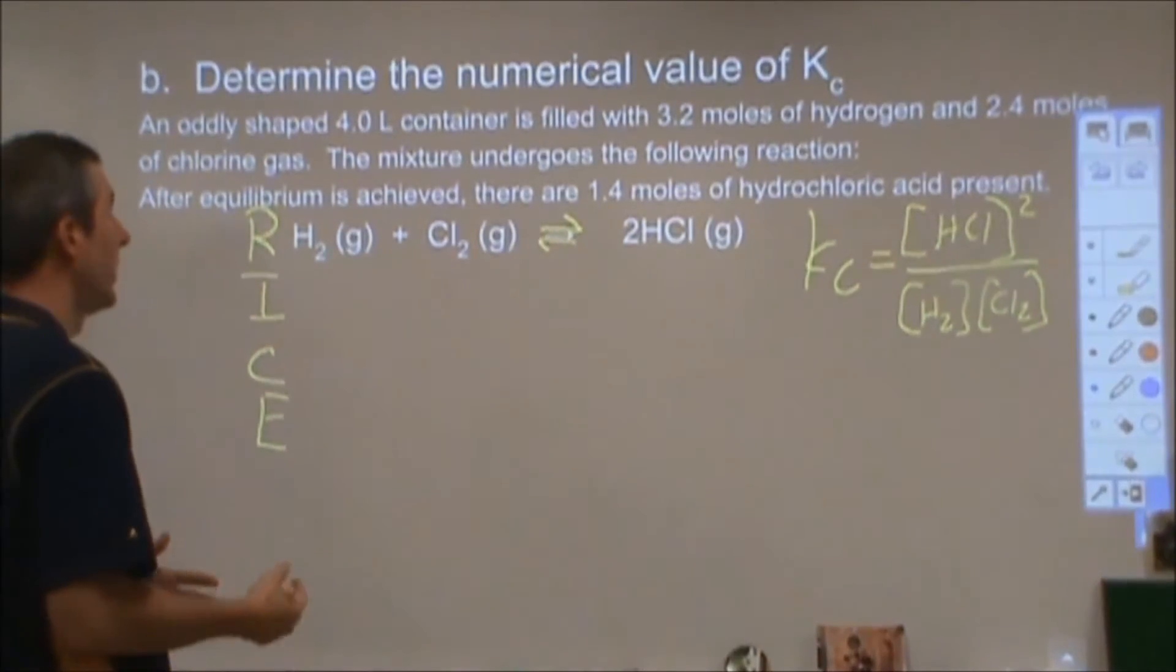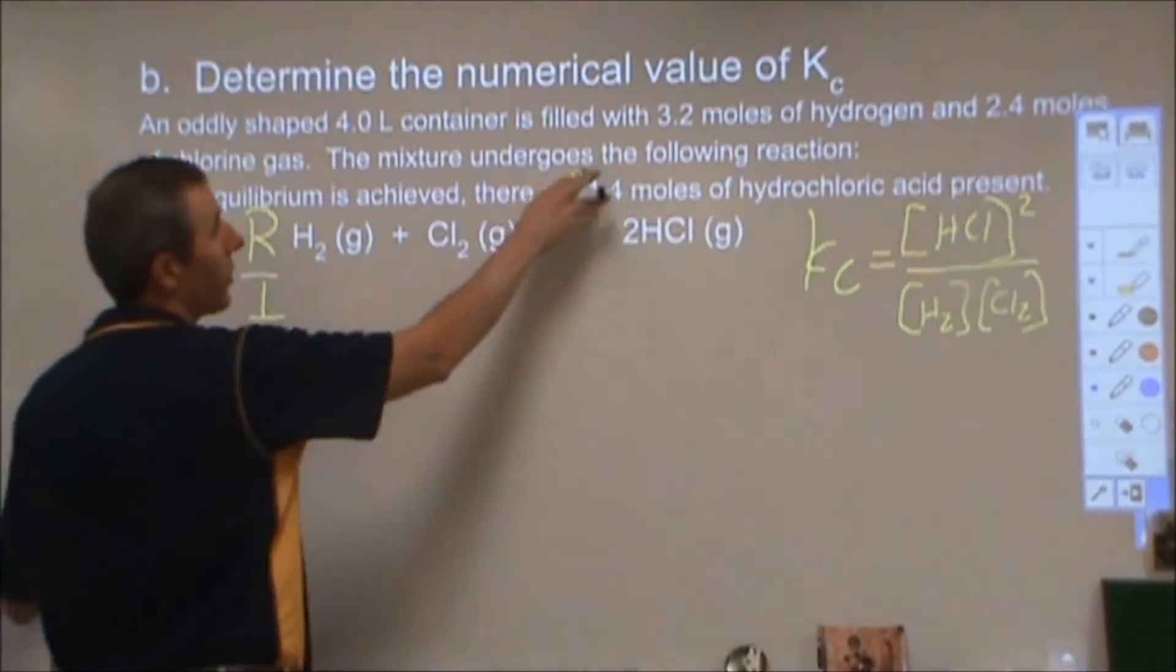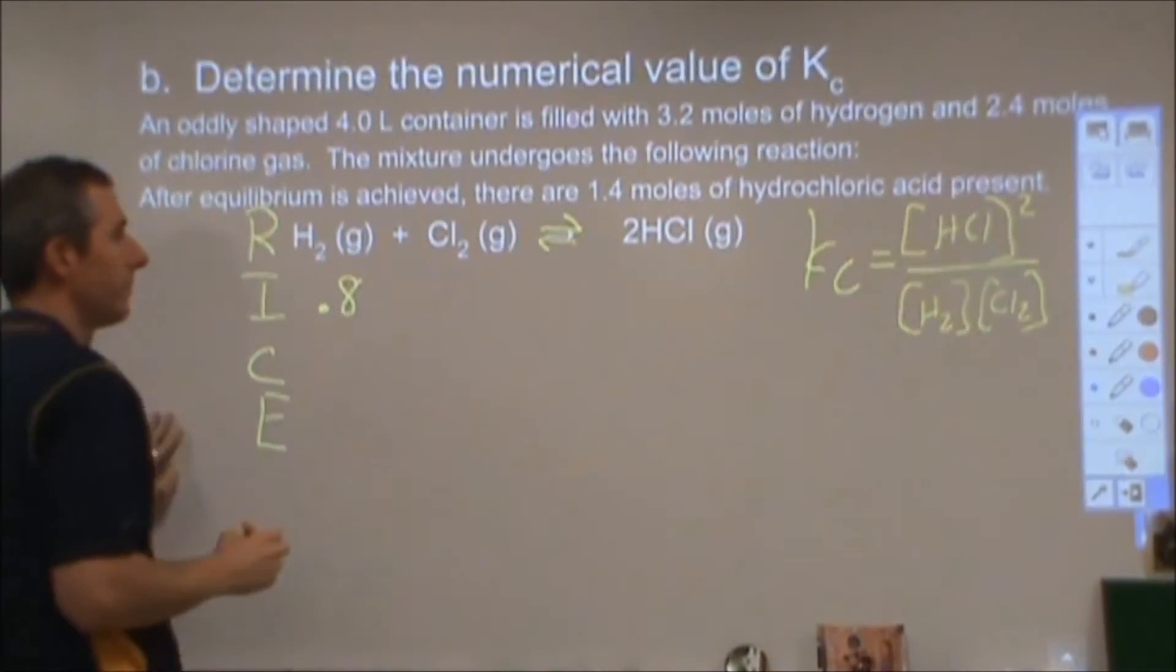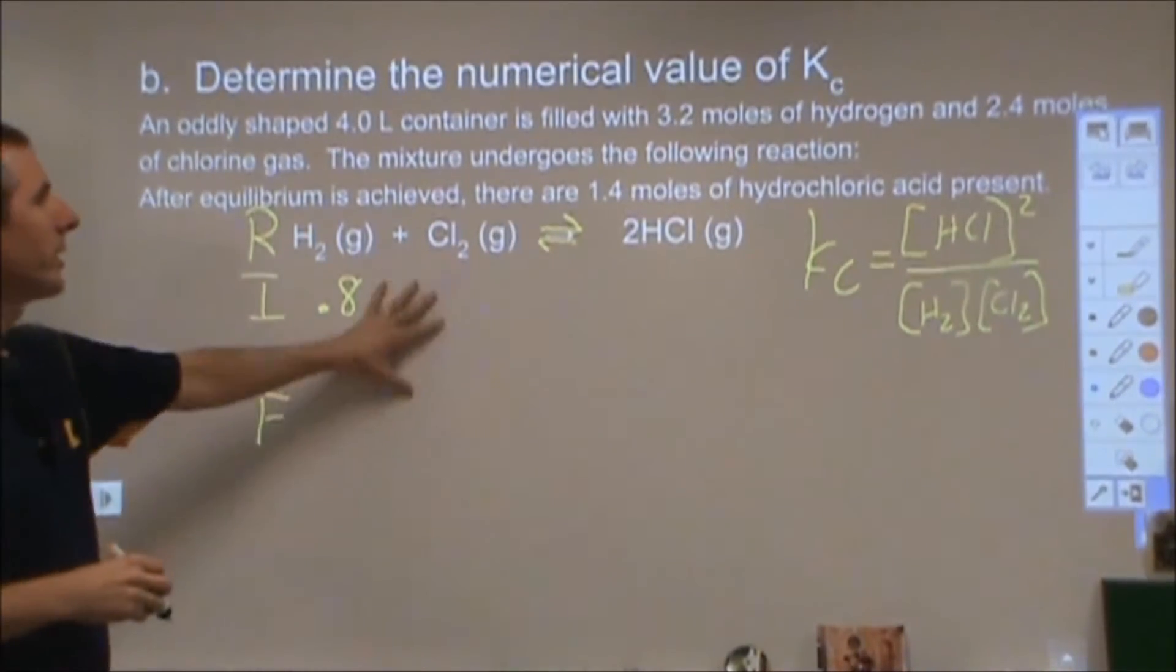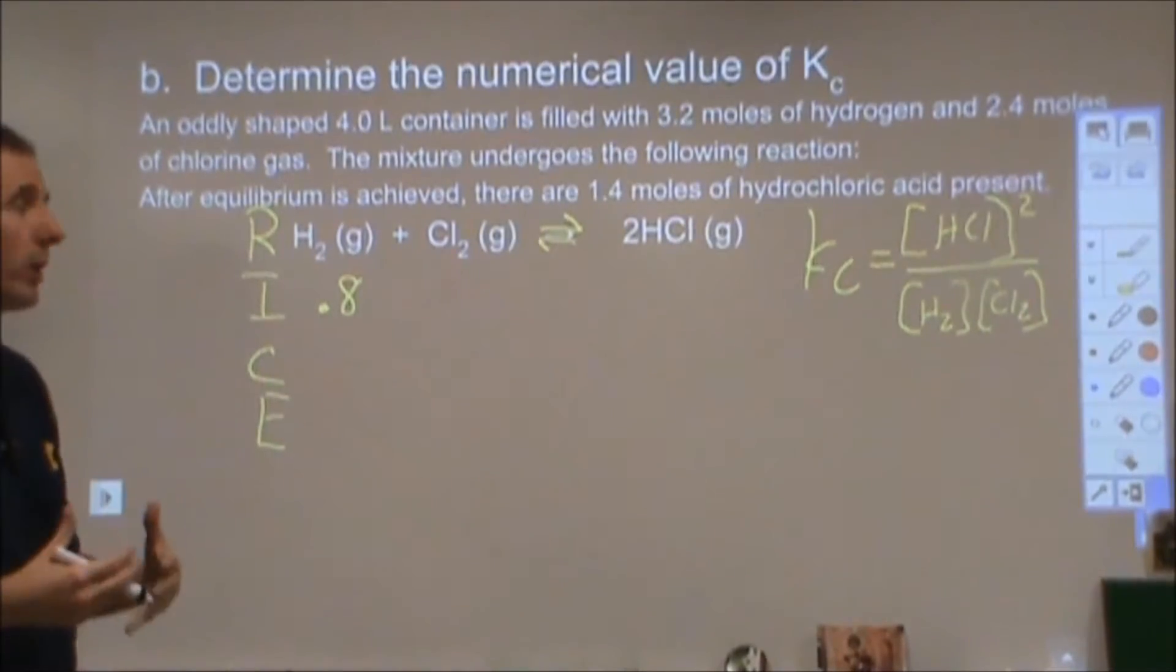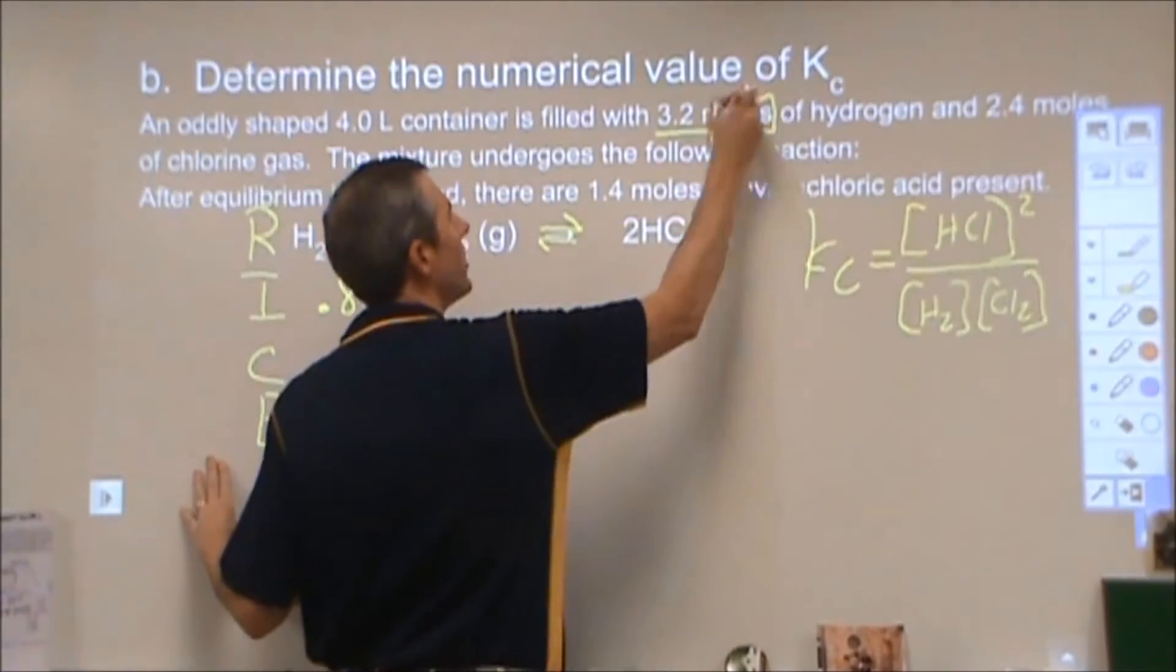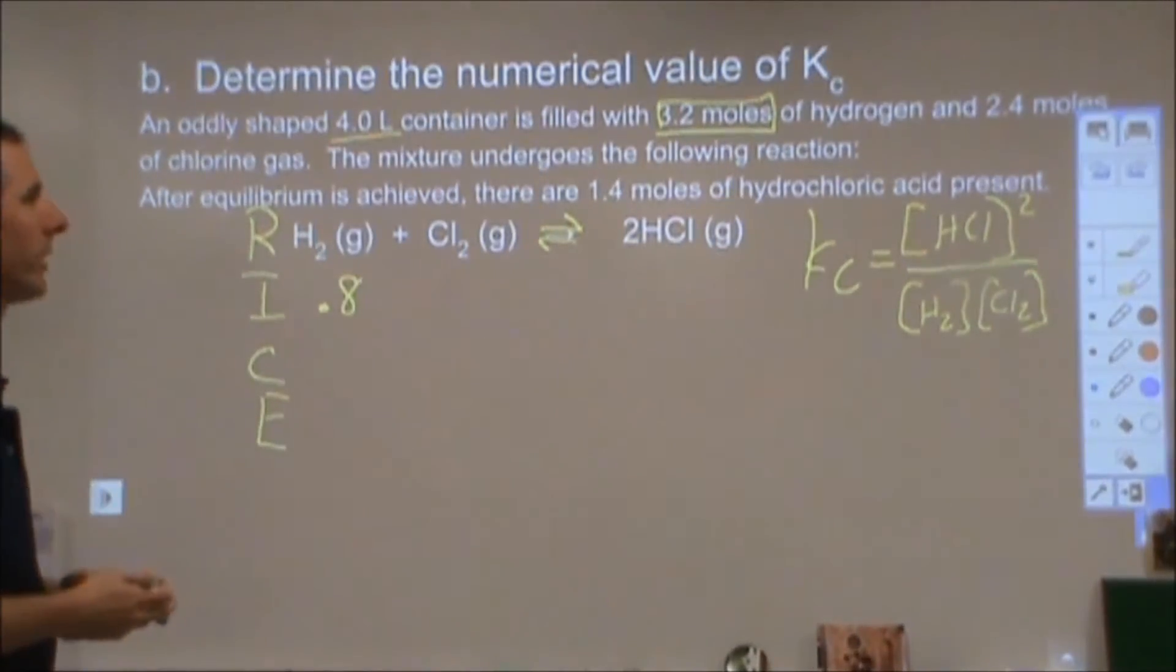At equilibrium how much do I have? Initially, I start with 3.2 moles of hydrogen in a 4 liter container. That is 0.8 molar. All of the values that go in here are all going to be in concentration of molarity. So don't just put your moles in there. Make sure that you take your moles and use your liters to figure that out.